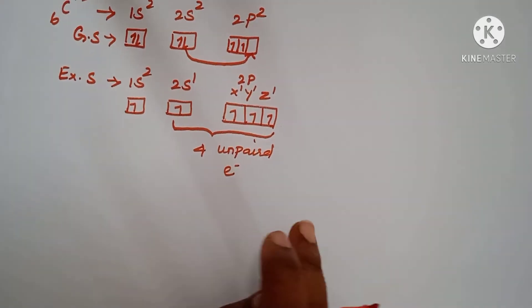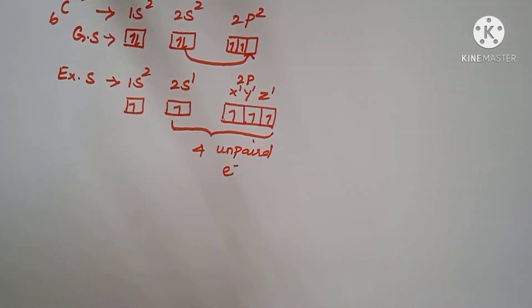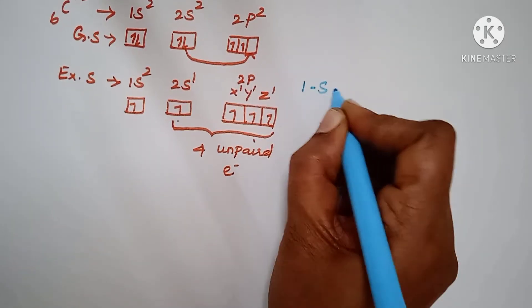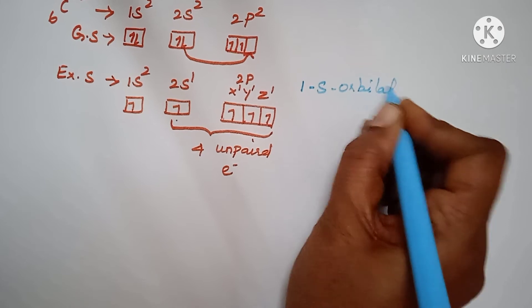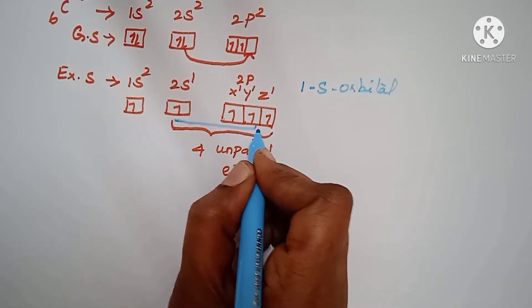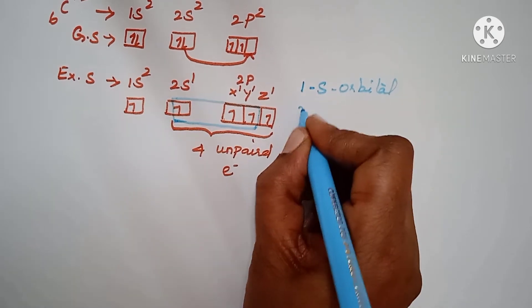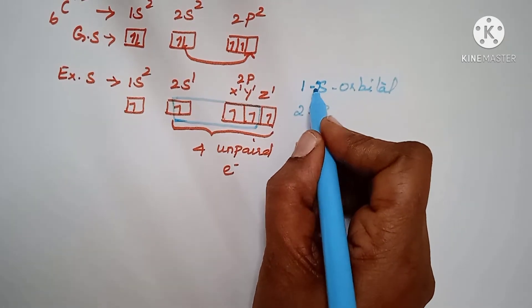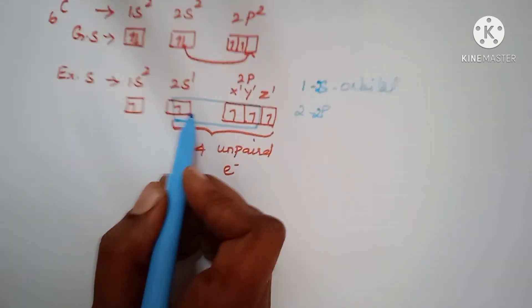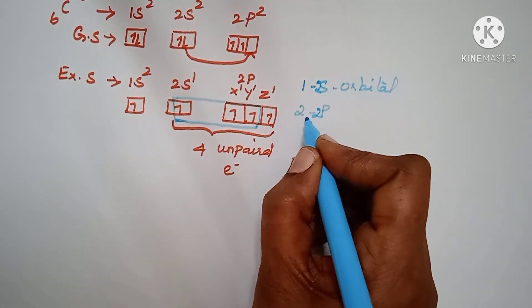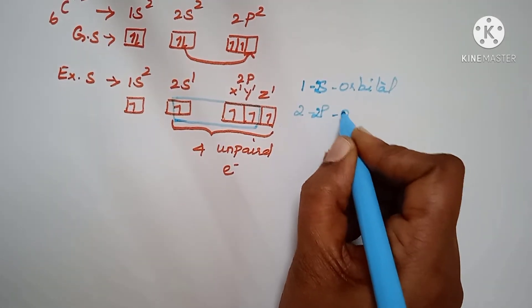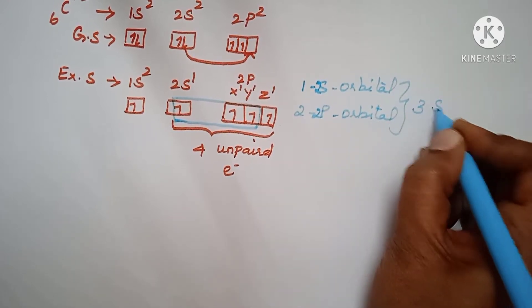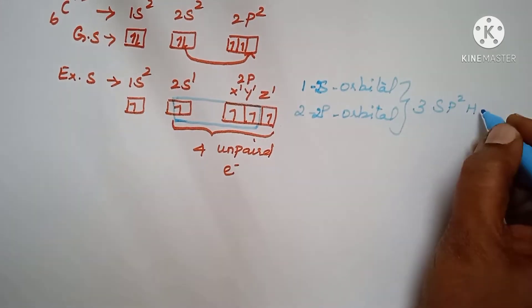That is what we are saying, it is a tetravalency. Now in this point, here 2s orbital and 2p orbital combine. That means 2s, this is 2s, this is 2s and this is 2p. This is 1s, 2s, 1 2s orbital, 2 2p orbital combine to form 3 sp2 hybridized orbitals.